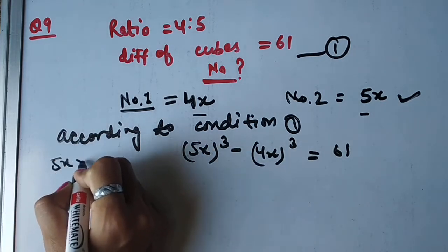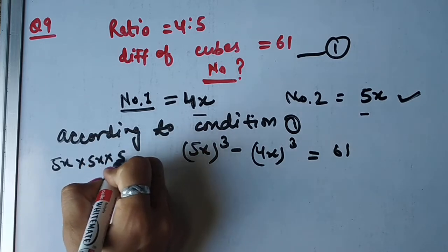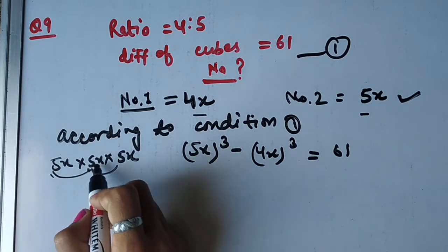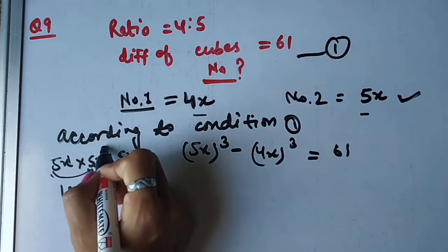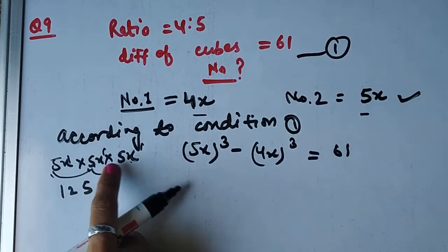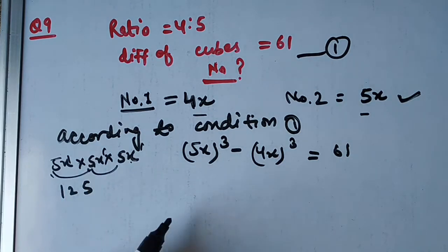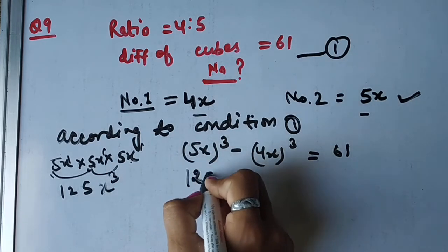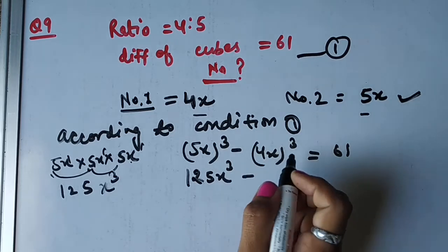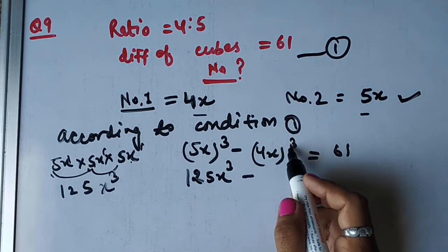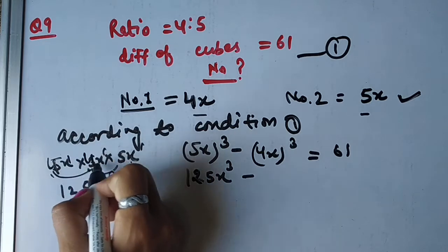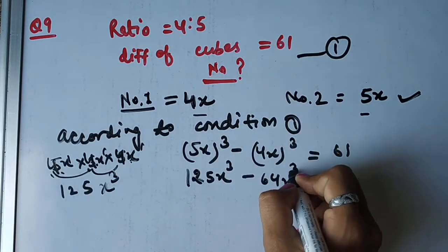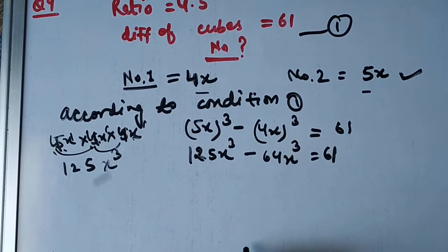5x ka cube nikalna hai toh 5x × 5x × 5x. Constants multiply honge pehle: 5 × 5 = 25, phir × 5 = 125. Variable x ka: same base hai toh power add hongi, toh x ki power 3. Yahan pe 125x³ minus. Ab 4x ka cube: 4 × 4 = 16, × 4 = 64. Toh yahan 64x³. Equals 61.